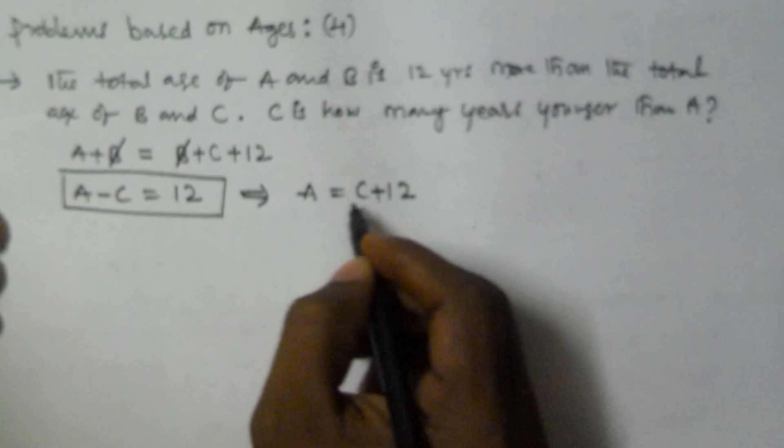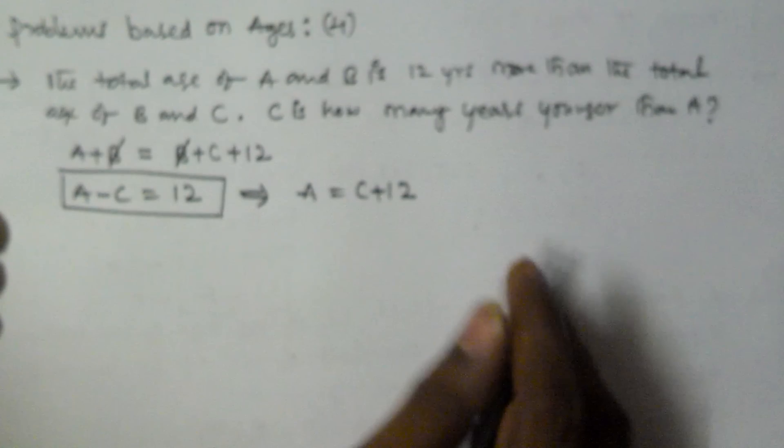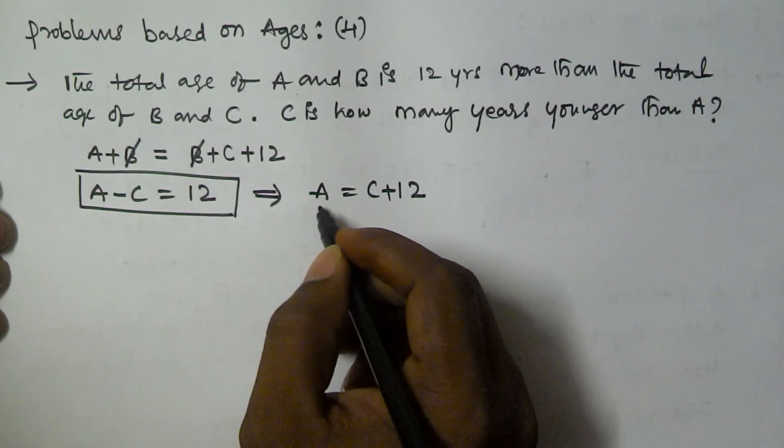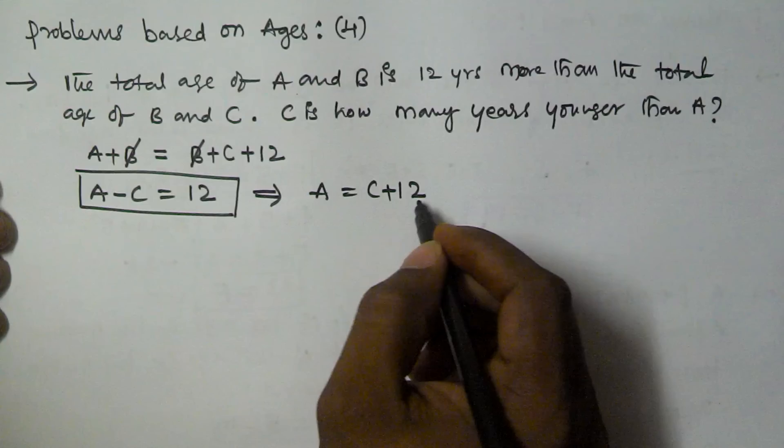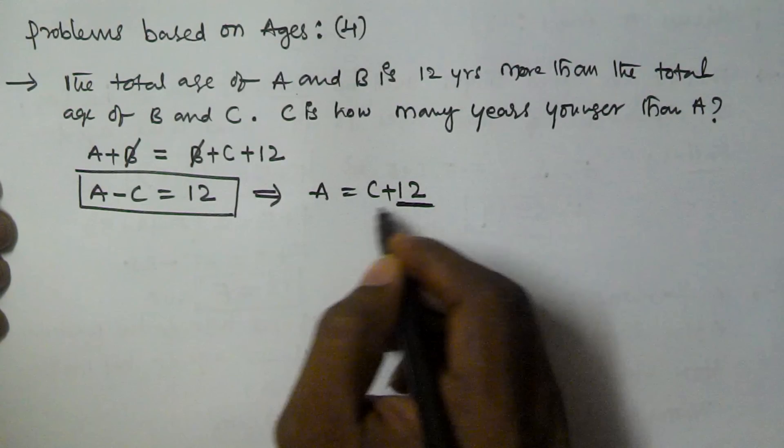That means C is 12 years younger than A. C is 12 years younger than A.